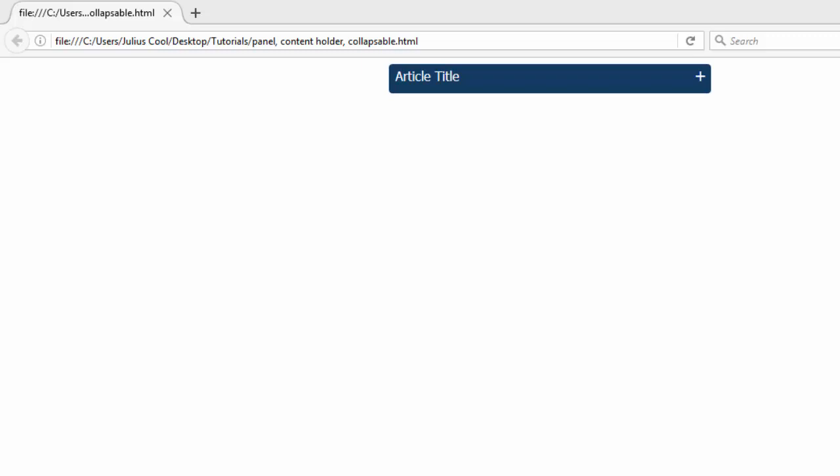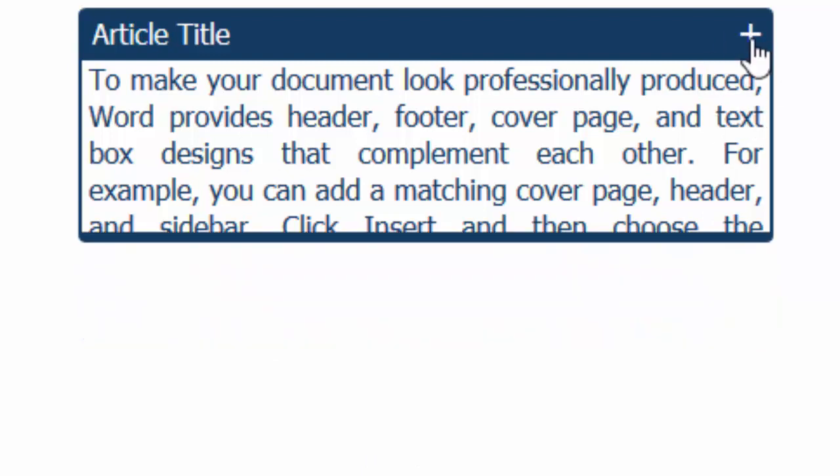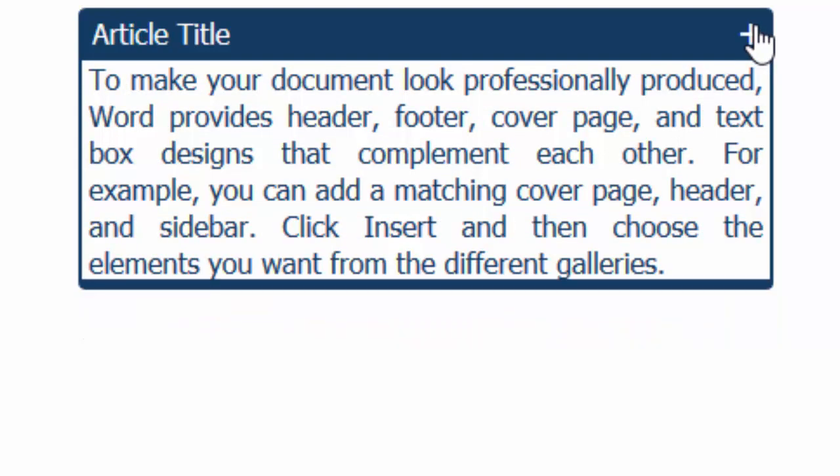Let us demonstrate. You can see we have this bar with an article title and a symbol. When you click on it, the content and the footer will appear and the plus displays as a minus. When you click on it again, it will disappear, then appear, then disappear.